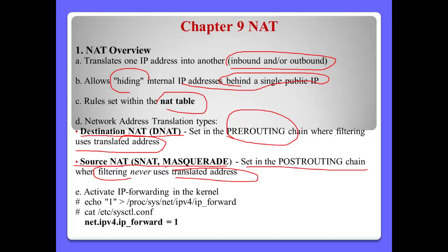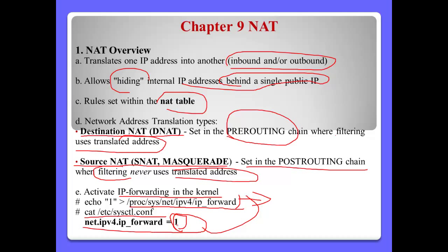To use the NAT feature in IP tables, first activate IP forwarding in the kernel. Use the command: echo 1 > /proc/sys/net/ipv4/ip_forward. This permits and activates IP forwarding in the kernel, but it is a temporary configuration. For a permanent change, please edit /etc/sysctl.conf and activate this feature there.